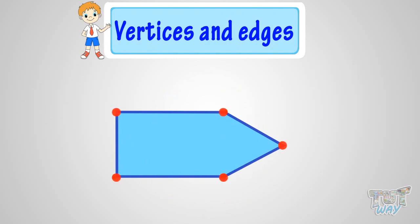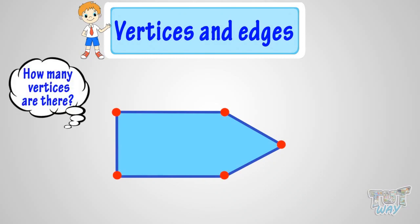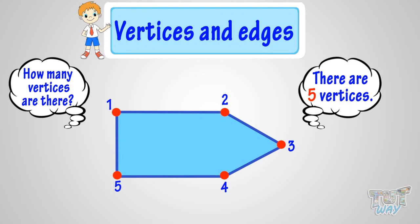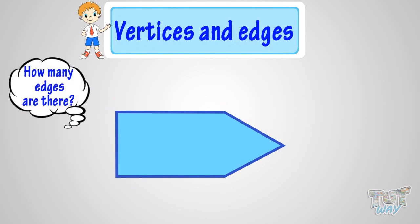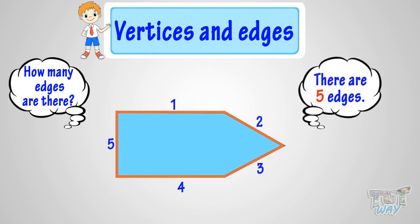Now here we have another figure. Let's count its vertices and edges. We know vertices are the points where two edges meet, or they are the corners in the figure. So let's count: one, two, three, four, five. So there are five vertices in this figure. Now let's count the edges. We know an edge is the line that joins two vertices. One, two, three, four, five. So there are five edges in this figure.